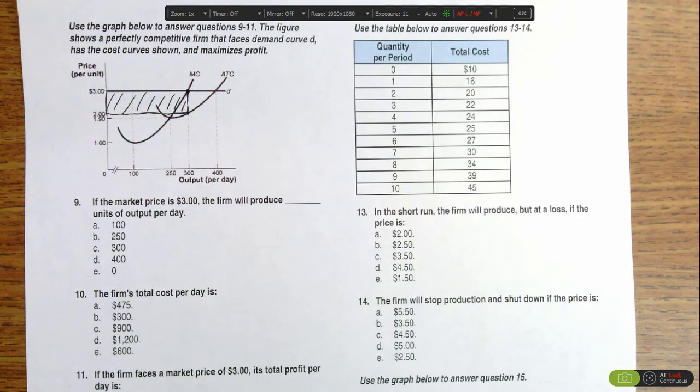To solve this problem, we're trying to find where the firm would produce at a loss. We need to know the minimum point of both the average total cost and average variable cost curves because firms will produce as long as the price falls within that range.